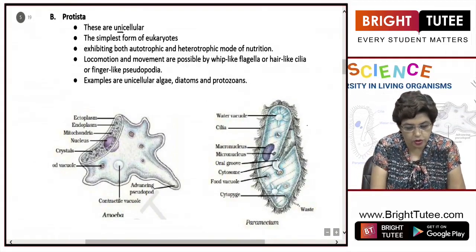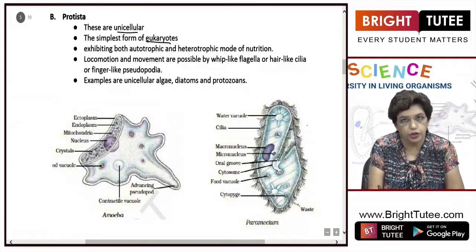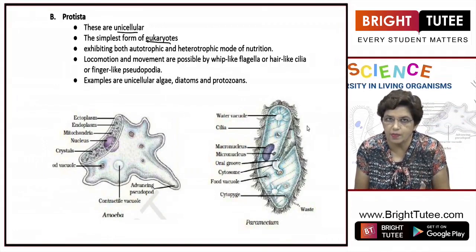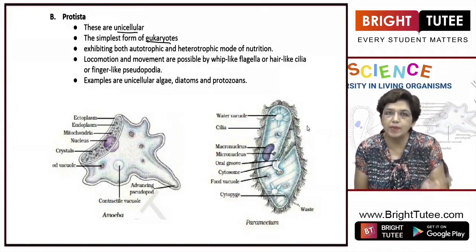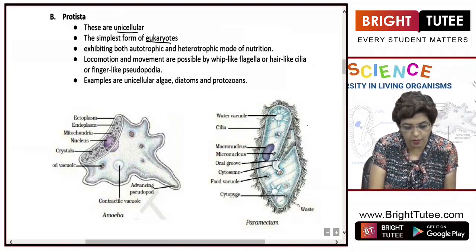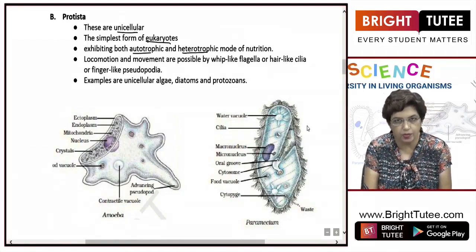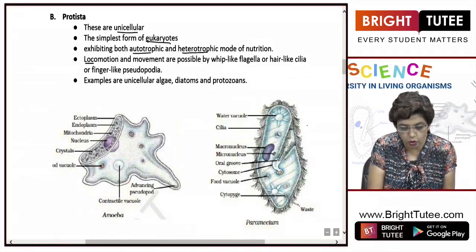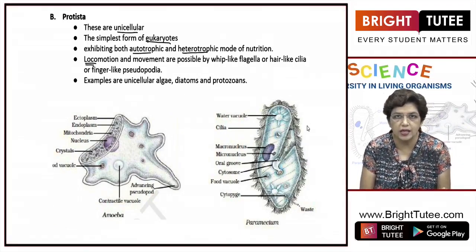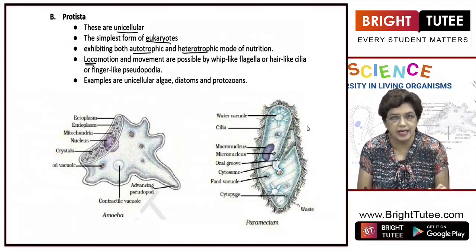These are also unicellular but they are eukaryotic cells. Eukaryotic cells means they have membrane-bound nucleus and membrane-bound organelles. Some of them are autotrophic while others are heterotrophic. For locomotion, some organisms have pseudopodia, some have tiny hair-like cilia, and some have flagella.